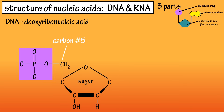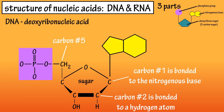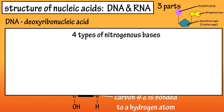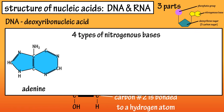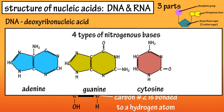An important note: the number 2 carbon of the deoxyribose sugar is bonded to a hydrogen atom. Carbon atom number 1 of the deoxyribose sugar is bonded to the nitrogenous base. There are four types of nitrogenous bases that can be found in DNA: adenine, guanine, cytosine, and thymine.